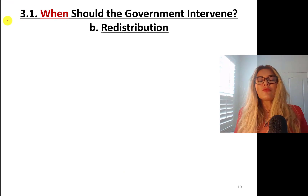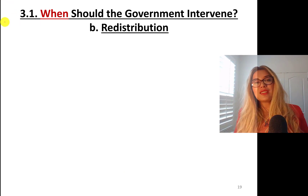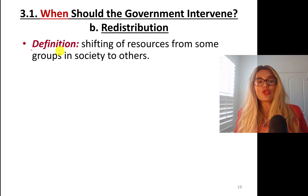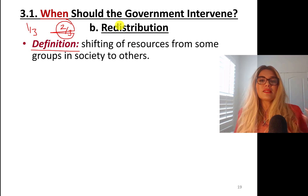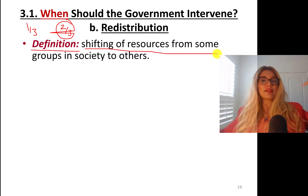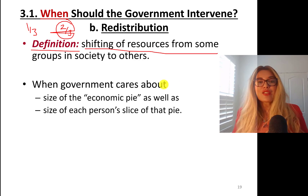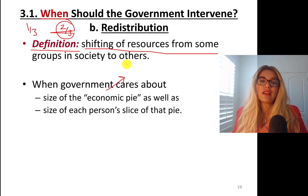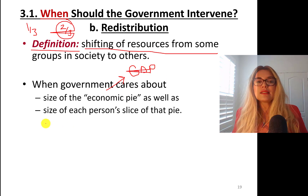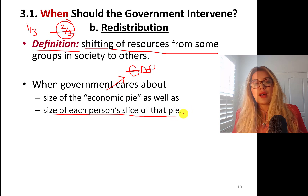The second reason government should intervene is redistribution. In the tuition example, you're paying one third of your total college costs while taxpayers pay two thirds. Redistribution is the shifting of resources from some groups in society to others. When government cares not only about the size of the economic pie — gross domestic product — but also how it is distributed, that's about the size of each person's slice of that pie.